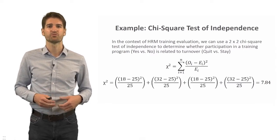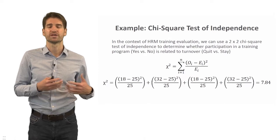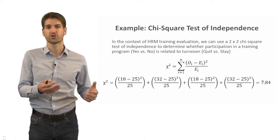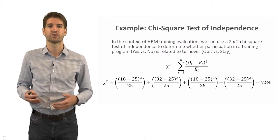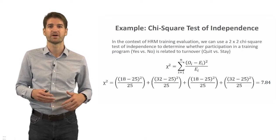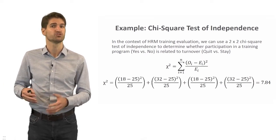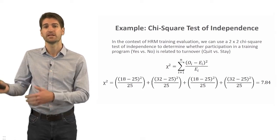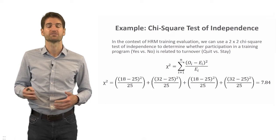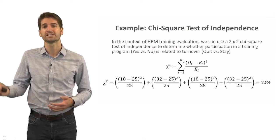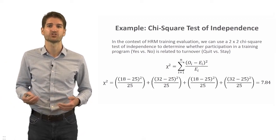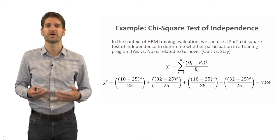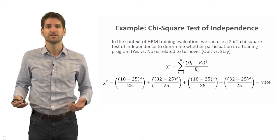For our example contingency table, we calculate: (18 − 25)² / 25, plus (32 − 25)² / 25, plus (18 − 25)² / 25, plus (32 − 25)² / 25. This gives us a chi-square value of 7.84.